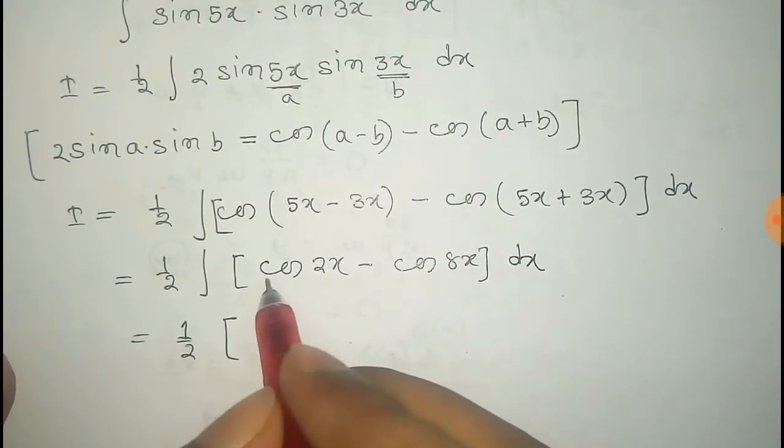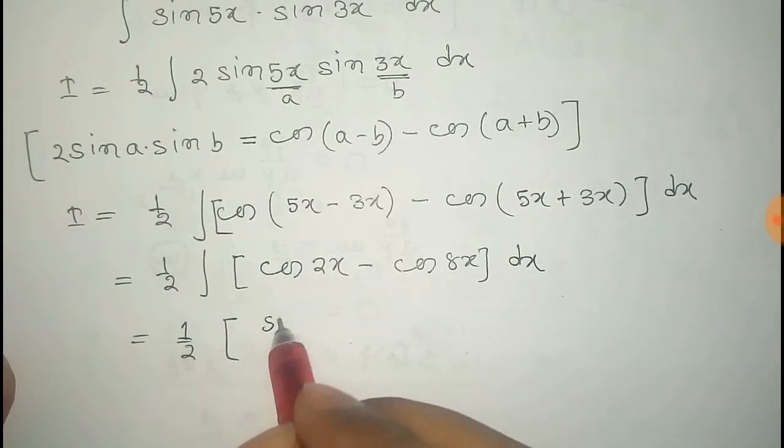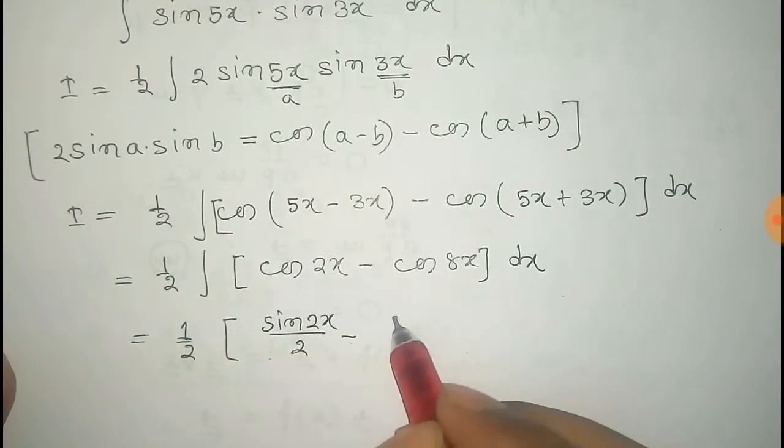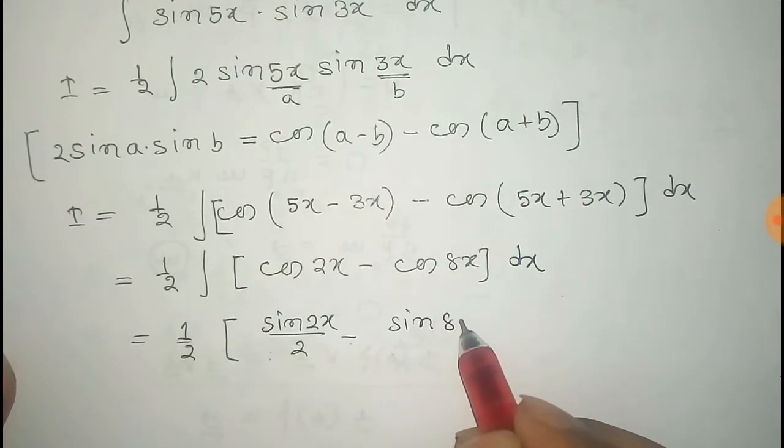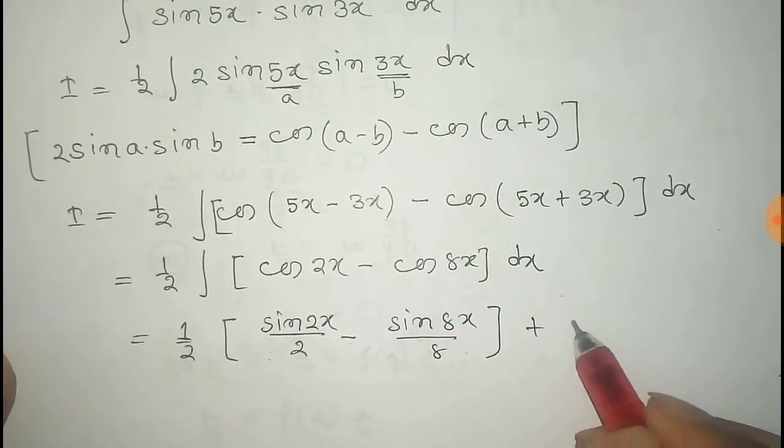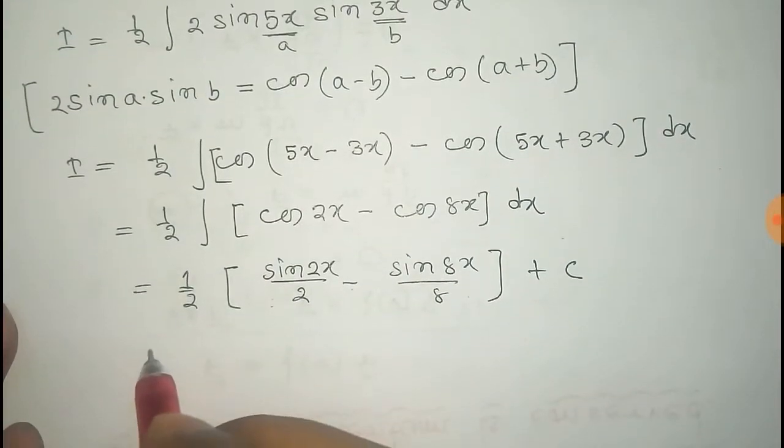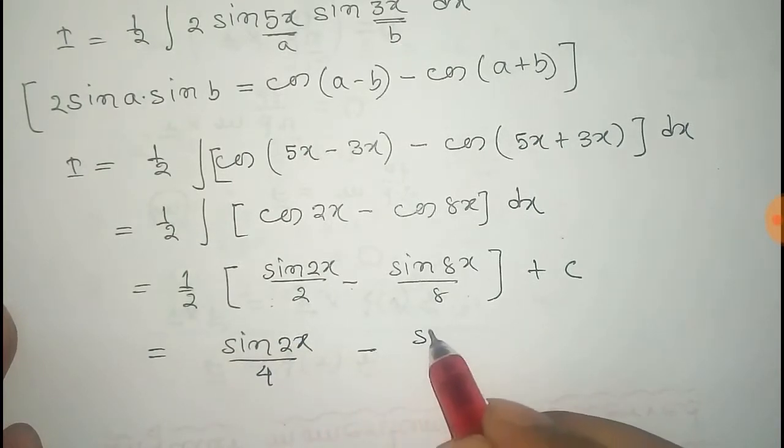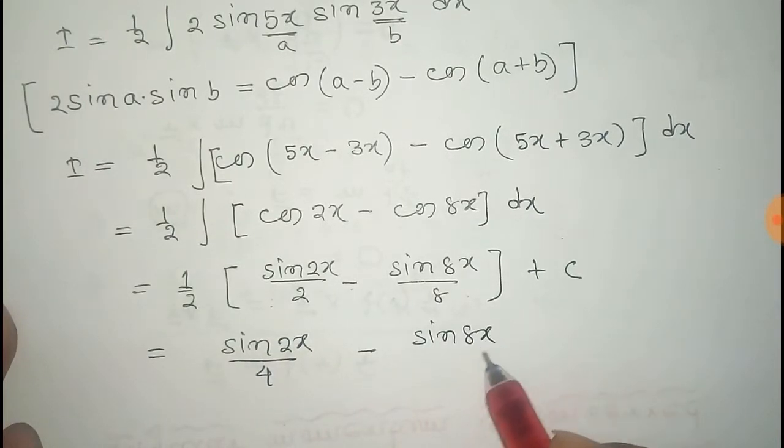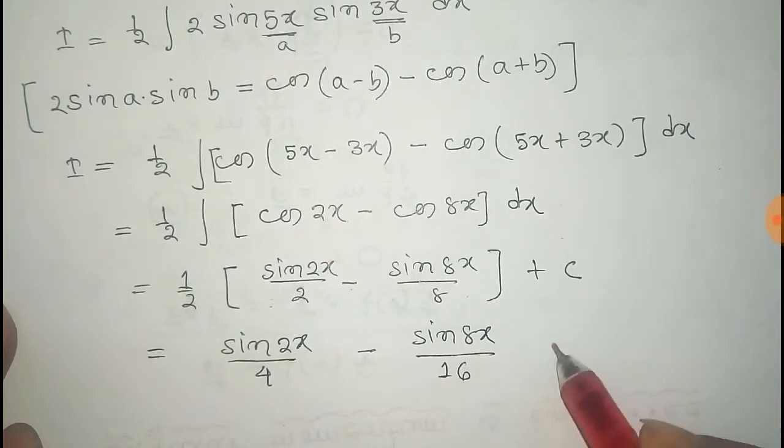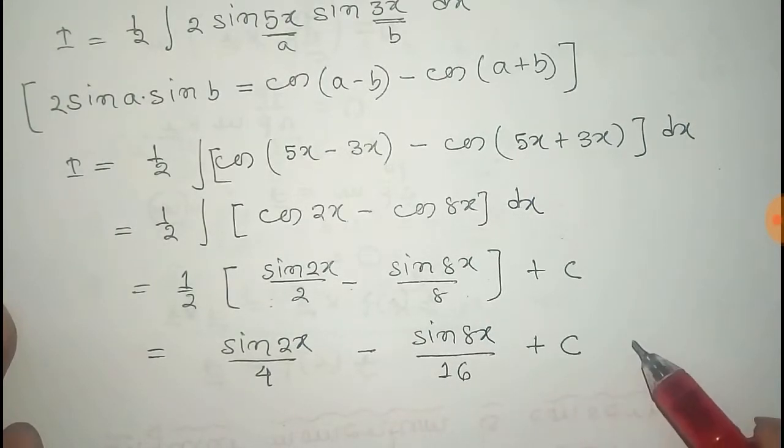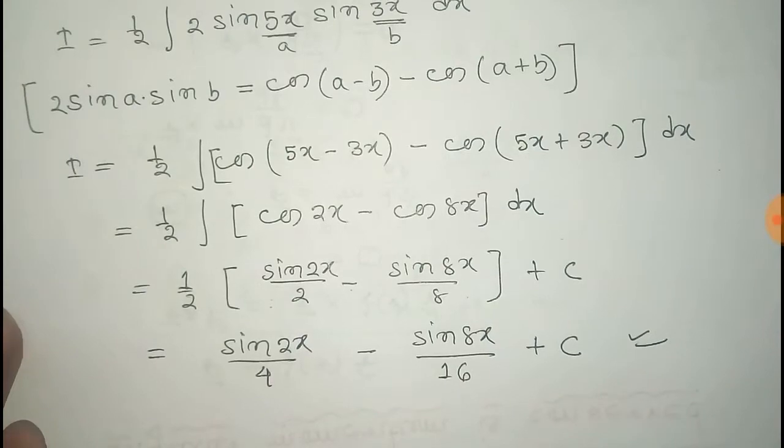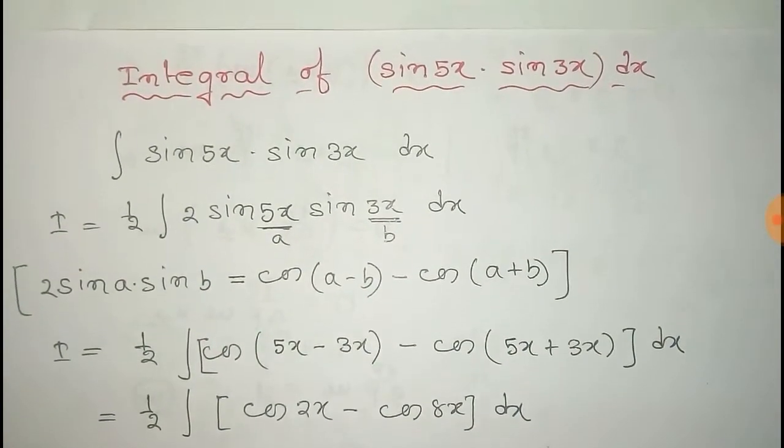Now the integral of cosine 2x is sine 2x by 2 minus integral of cosine 8x is sine 8x by 8 plus constant of integral. So that is equals to sine 2x by 4 minus sine 8x by 16 plus c. Thus we get the integral of sine 5x into sine 3x.